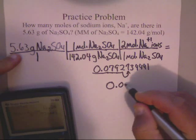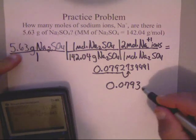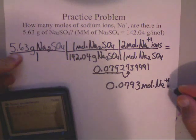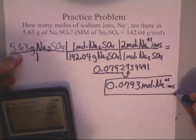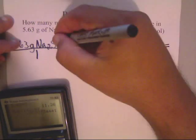So my answer is 0.0793. And it would be moles of Na⁺. And then write the word ions on there. And that's it. And you're done. It's that simple.